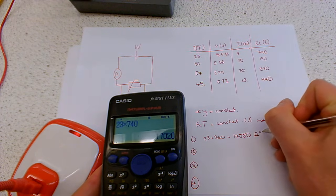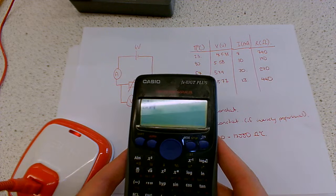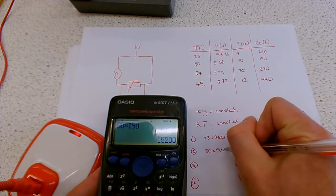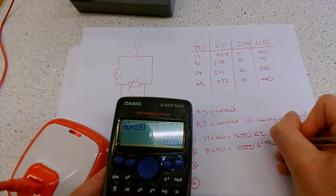If we're being precise, I should give units. So that's ohms centigrade. Then we're going to do eighty times one hundred and ninety. Which is about fifteen thousand ohm degrees Celsius.